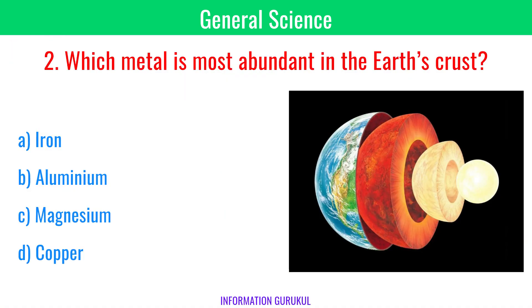Which metal is most abundant in the earth's crust? Aluminium.